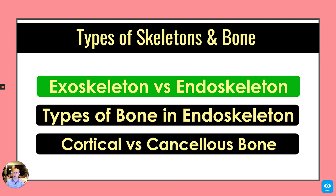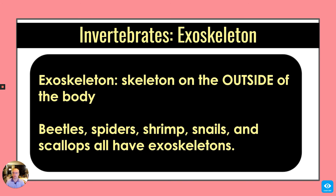So first, let's talk about the exoskeleton versus endoskeleton. The exoskeleton is a skeleton on the outside of the body. It can be made of chitin or calcium. Beetles, spiders, shrimps, snails, and scallops all have exoskeletons.